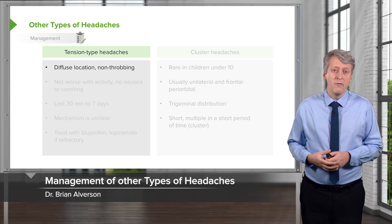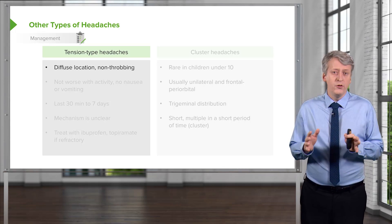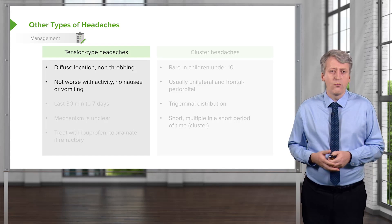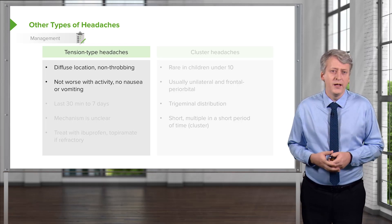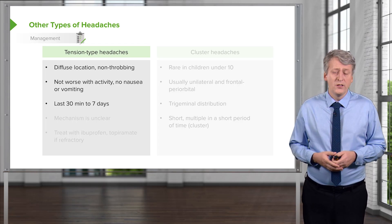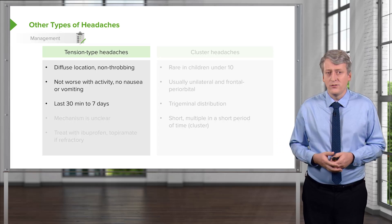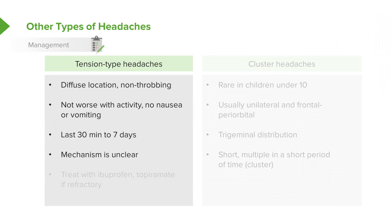One common type of headache is the tension-type headache. Tension headaches are usually diffuse in location and non-throbbing. They're usually not worse with activity, and there's no nausea or vomiting associated. They can last up to 30 minutes but even up to 7 days, so they can be very prolonged. The mechanism isn't quite clear, and we usually treat them with ibuprofen or, if refractory, sometimes topiramate.